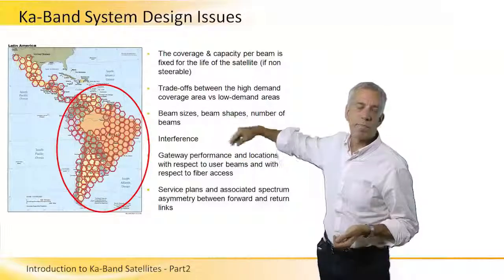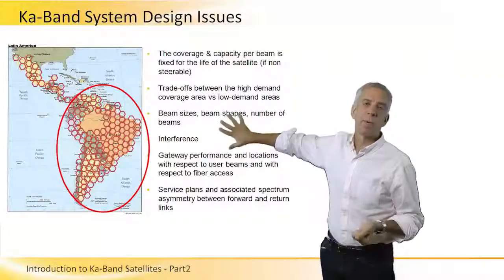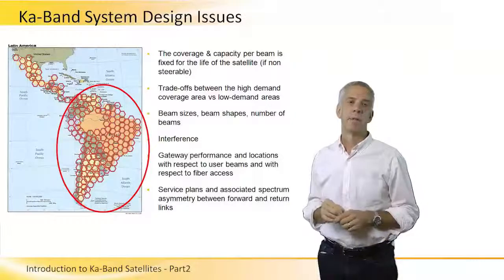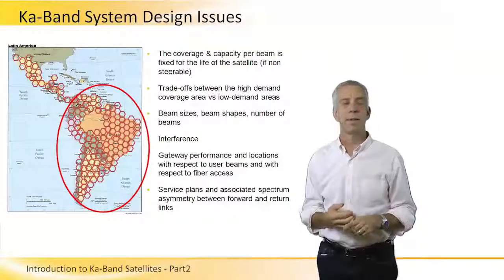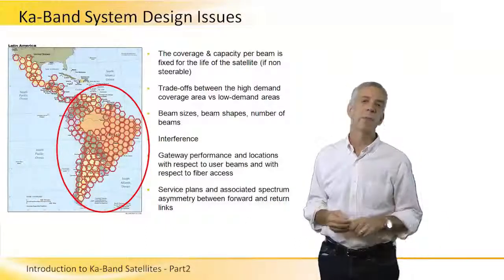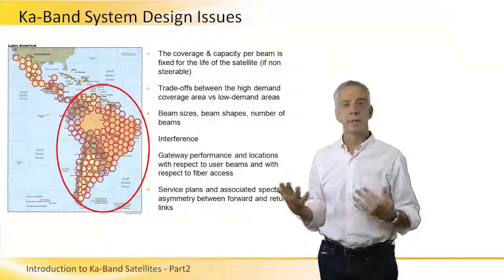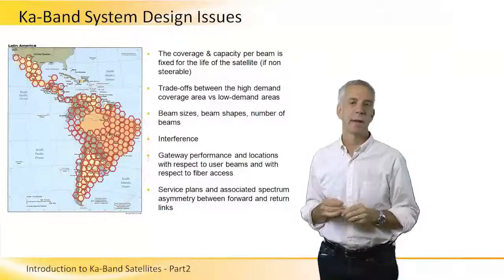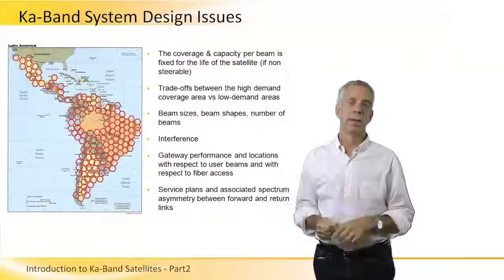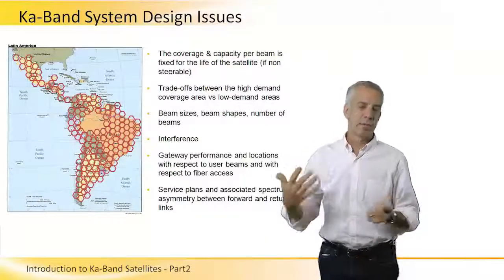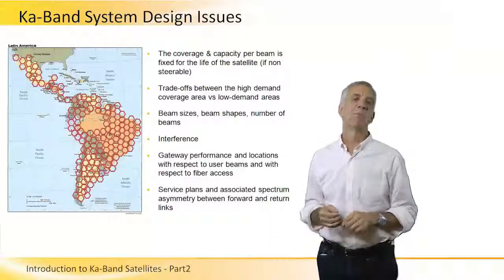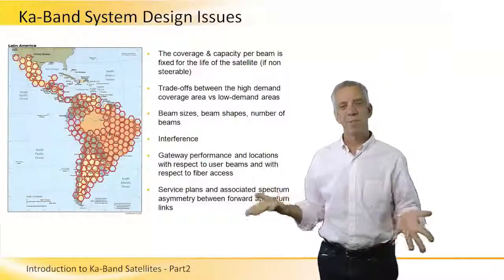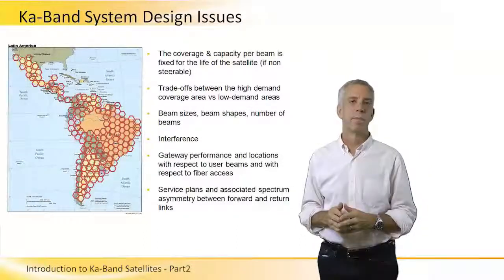Gateway stations should be placed in areas of low rainfall. If it rains at one user terminal, that's manageable — it's just one terminal. But if a gateway station goes down due to rain fade, that's a big deal, since it affects a large volume of traffic. Finally, operators must account for the asymmetry of internet access: most users consume eight to ten times more capacity downloading from the internet than they upload, and the satellite payload design should reflect those characteristics.